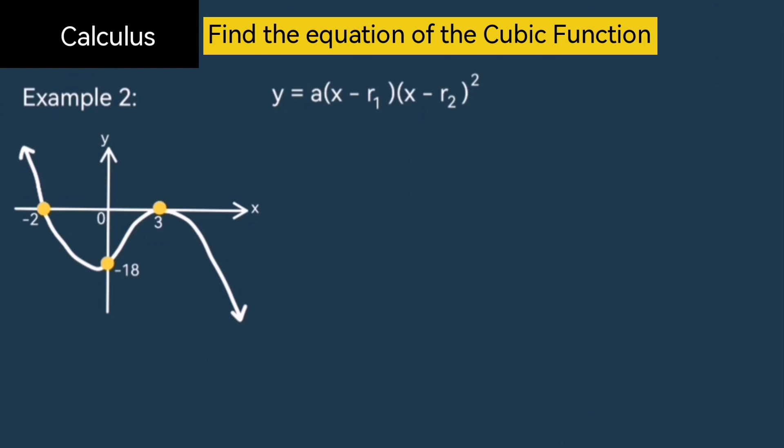Keep in mind that the bracket you are squaring should always be linked to the root that is also a turning point. So, this means we have x plus 2 and x minus 3 squared. You now would like to substitute a point to find a's value, as we did for the first example. So, here I've given the y-intercept again, so that we could do that.